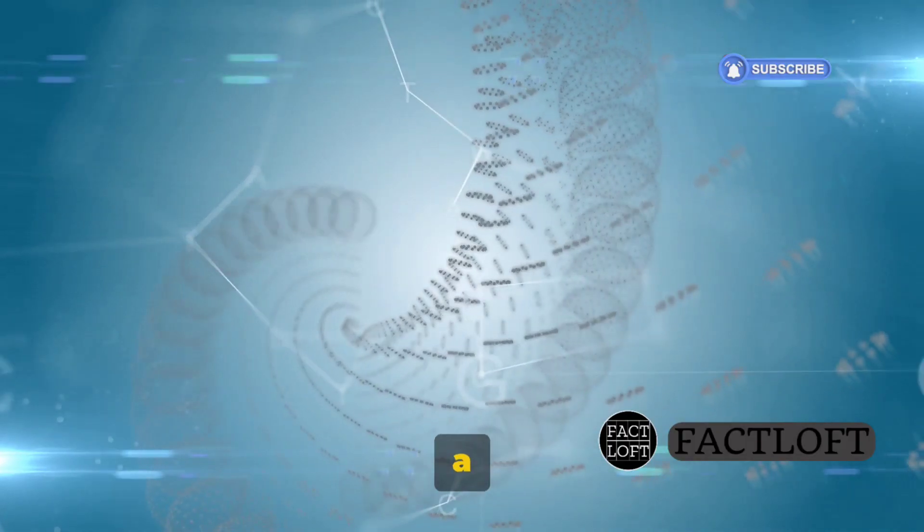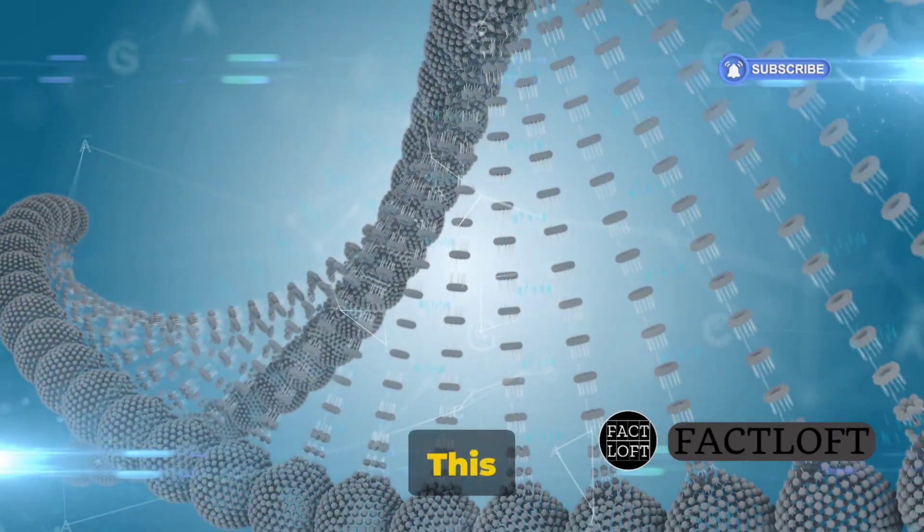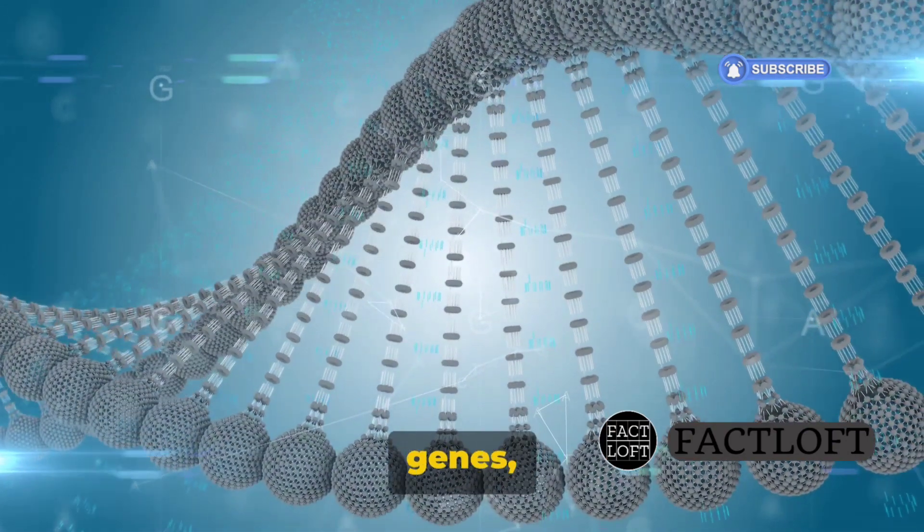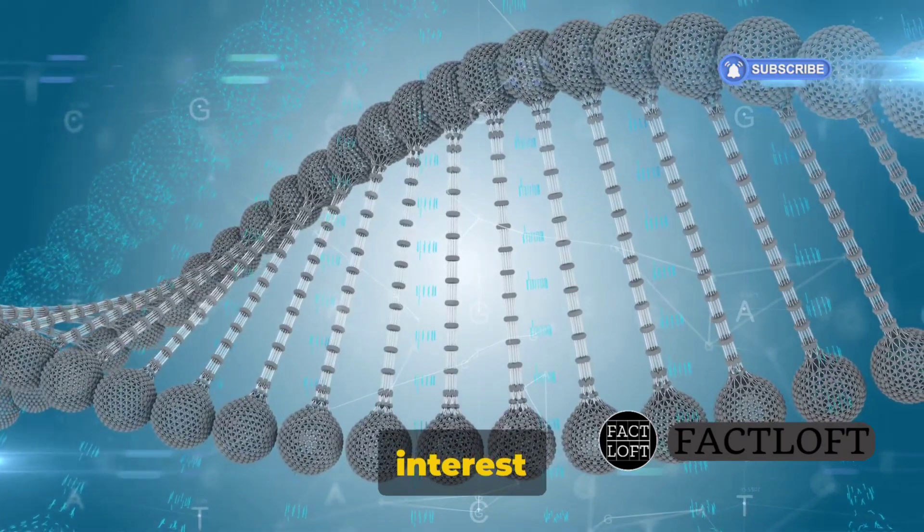Well, you need a vehicle, a transporter, a vector. This vector is like a courier service for genes, delivering the gene of interest right where it needs to go.